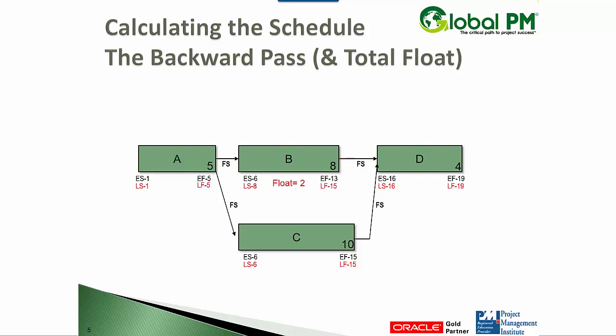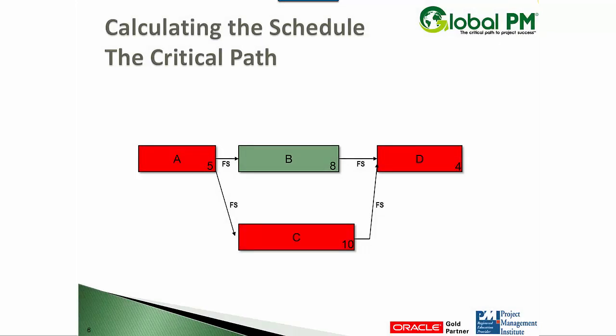The activities with zero float are critical, zero or negative. Here we can see the float shown on the back end. And here's your critical path.